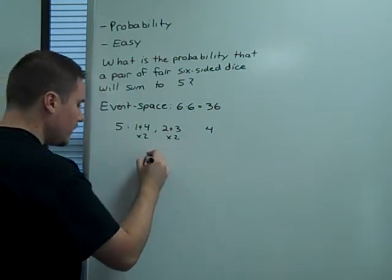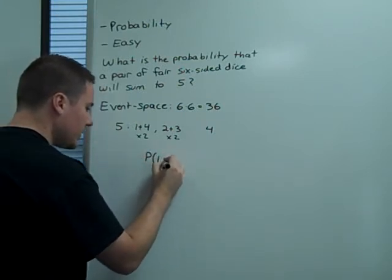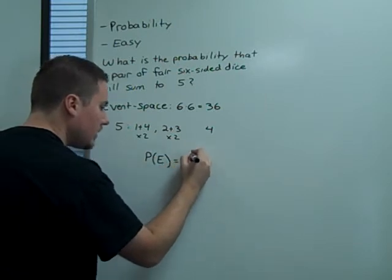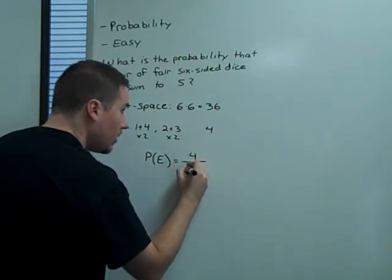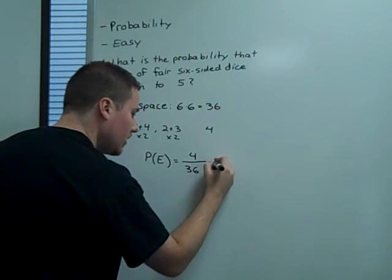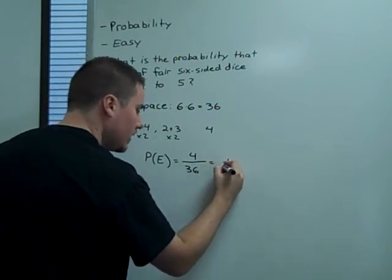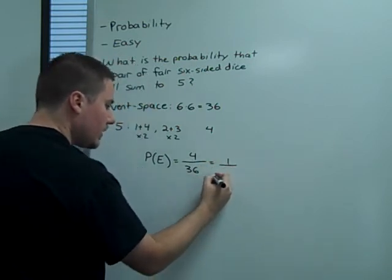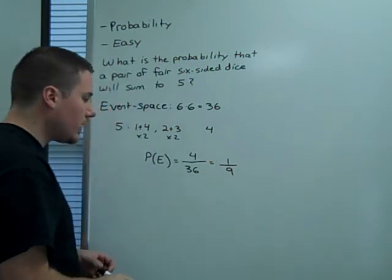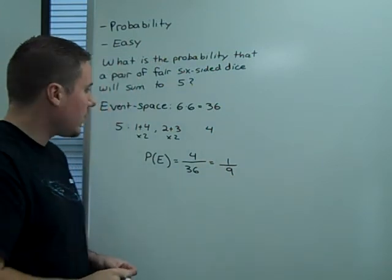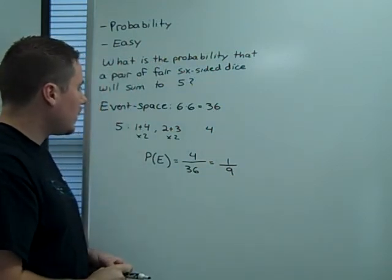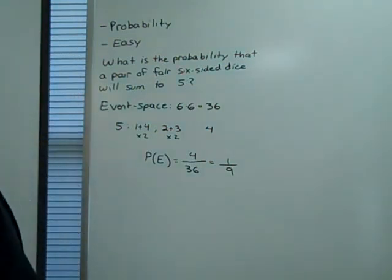So, we do the probability equation. The probability of this event is equal to four over 36, which reduces to one over nine. So, about a one in nine chance that you roll a five. All right, let's try that.